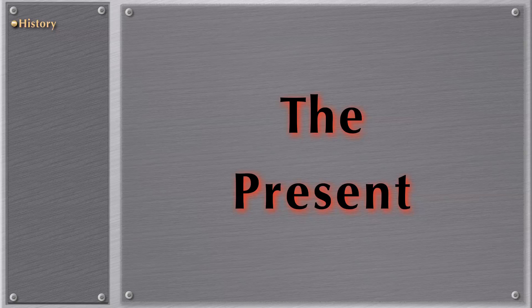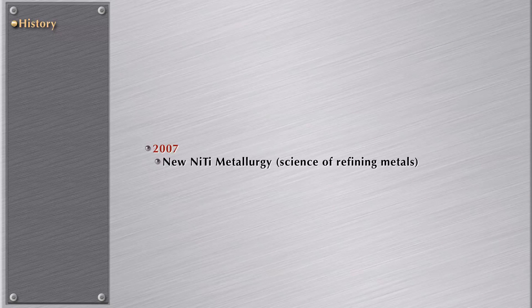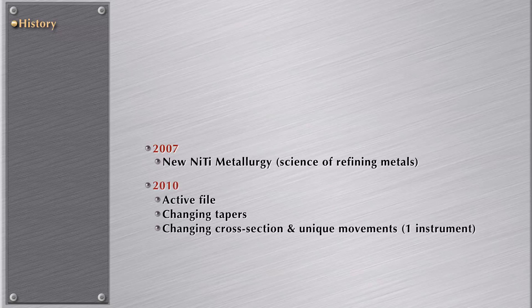The present starts in 2007. Why? It's the new nickel-titanium metallurgy changing — the evolution of metallurgy. At that time in 2007, two companies were in the market with a different type of nickel titanium. Then in 2010, we have the next generation of files. Now we have a file that is very active, it has changing tapers, it has two cross sections on the file, and it's only one instrument in 95% of the times to perform root canal therapy. And it has unique movements.